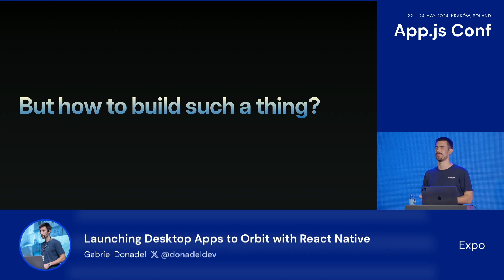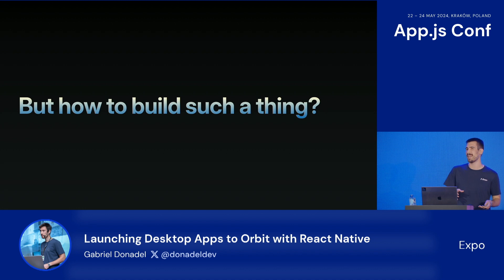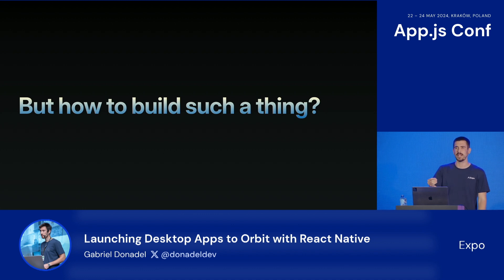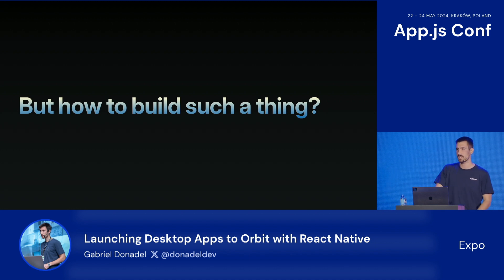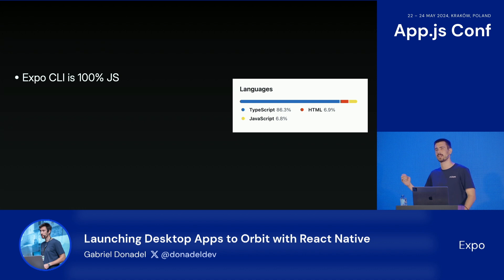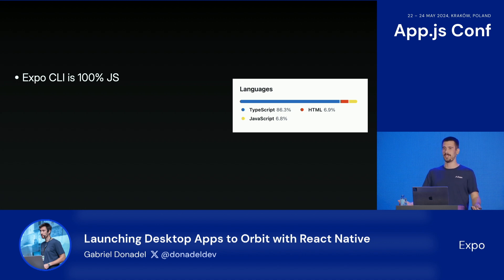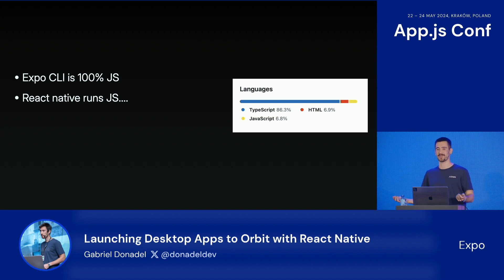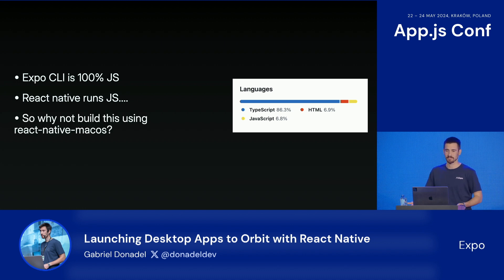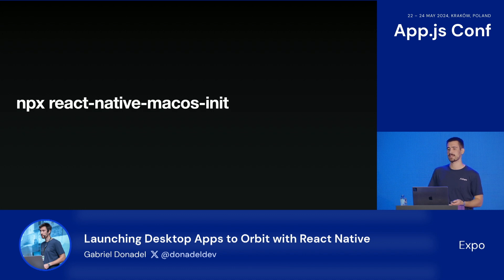But how to build such a thing? Expo CLI kind of already covered a bunch of that, but it doesn't really have a UI, and most of its features are specific to the commands being run. The idea was: what if we could leverage all this functionality already built into Expo CLI and just extract what we needed? If we take a closer look at the Expo CLI repo, it's basically 100% JavaScript. And we're all React Native devs — we know that React Native just runs JS. So why not just use React Native macOS, which already runs JavaScript, for this?